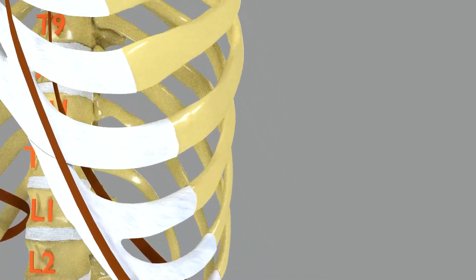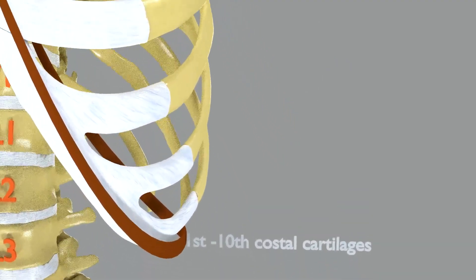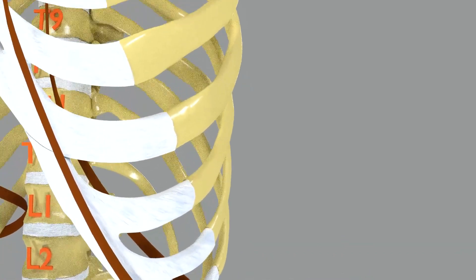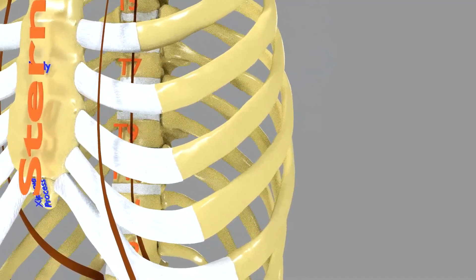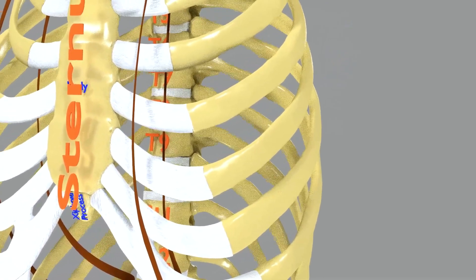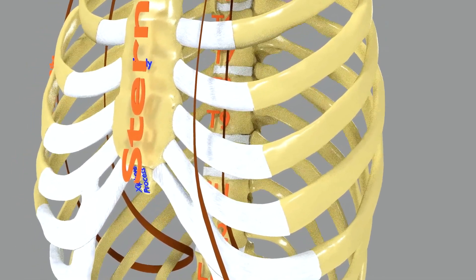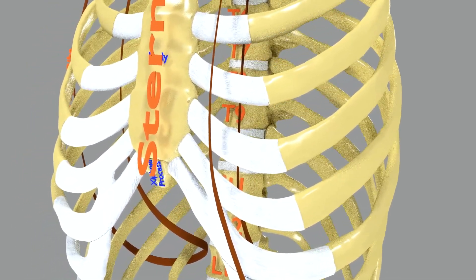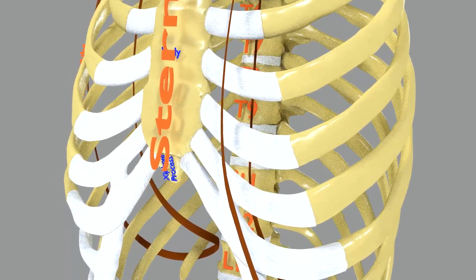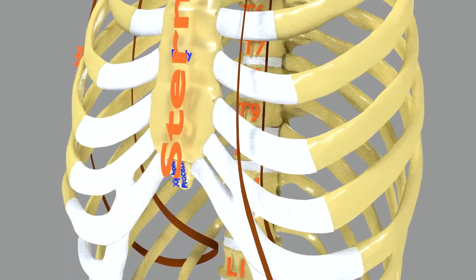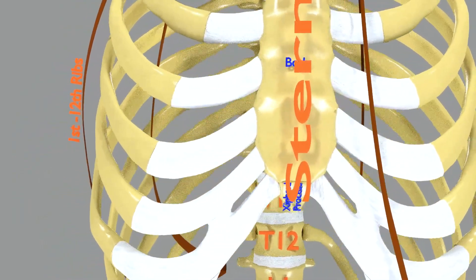You can also see 12 bony ribs and 10 costal cartilages attached to different parts of the sternum anteriorly. Out of the 12 ribs, the two lowermost ribs are called floating ribs as they are not attached to the sternum with any costal cartilage. Each bony rib includes the head, the neck, body or shaft, tubercle, and angle.